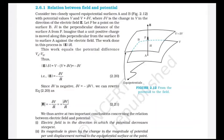We arrive at two important conclusions: first, the electric field points in the direction in which potential decreases; second, its magnitude equals the change in potential per unit displacement normal to the equipotential surface. In general, E = −dV/dr or E = −dV/dl.